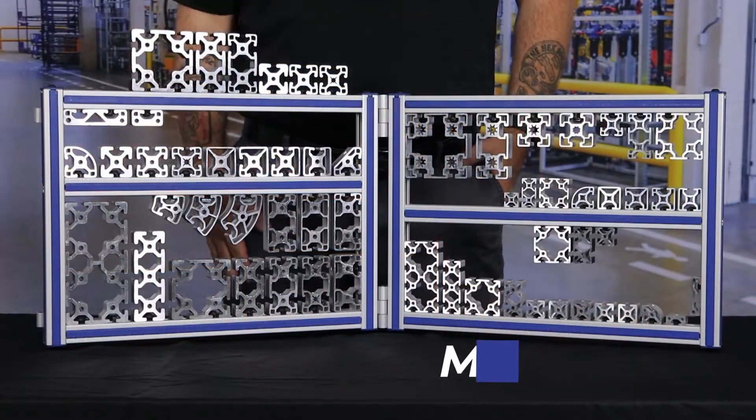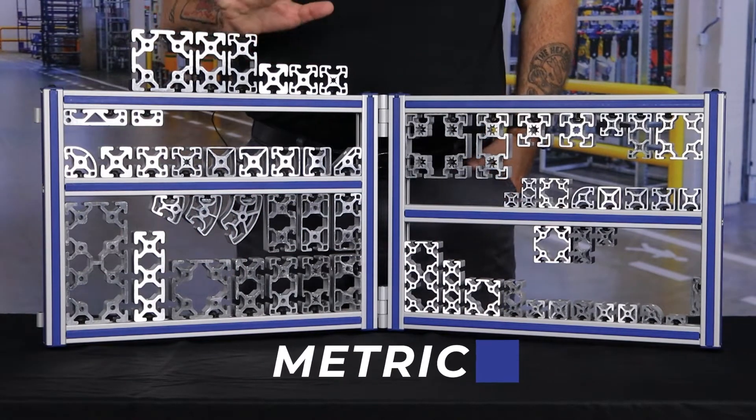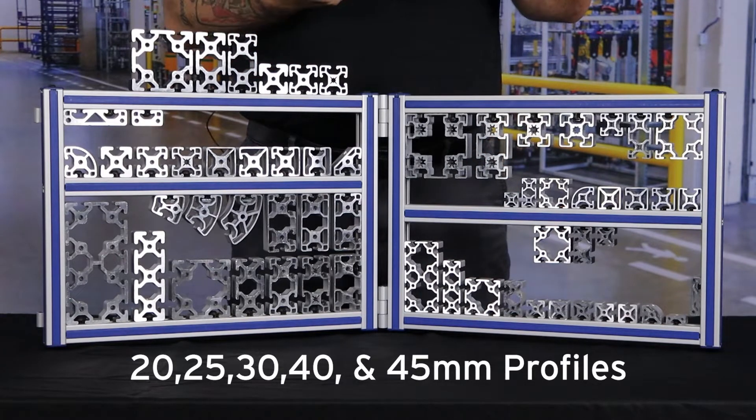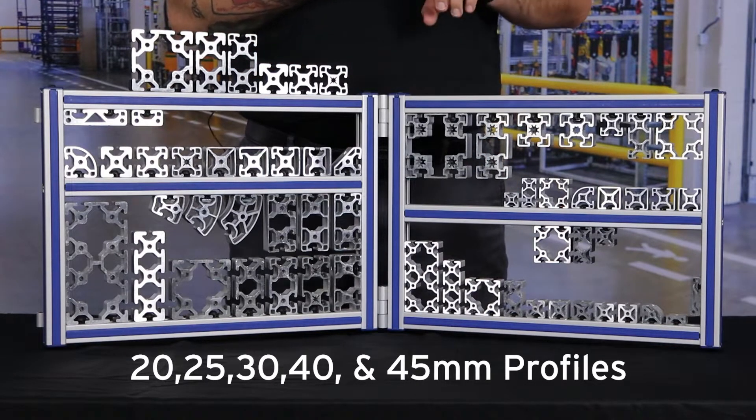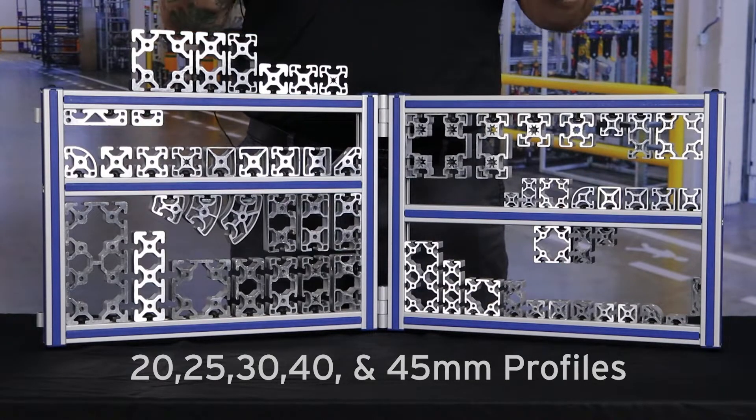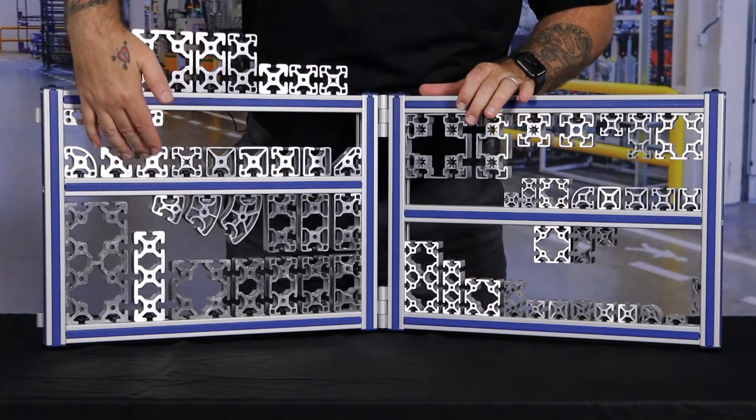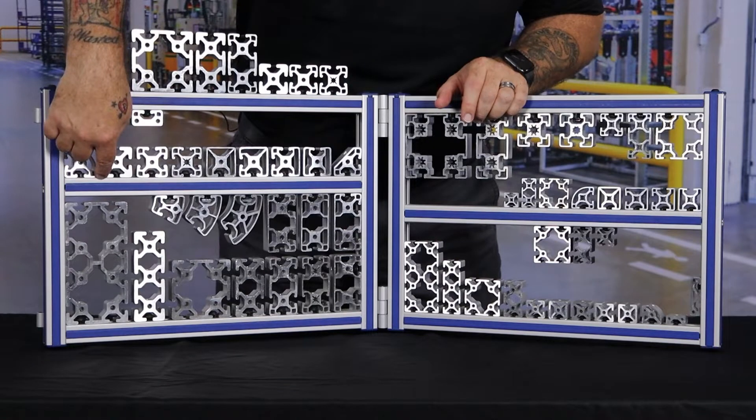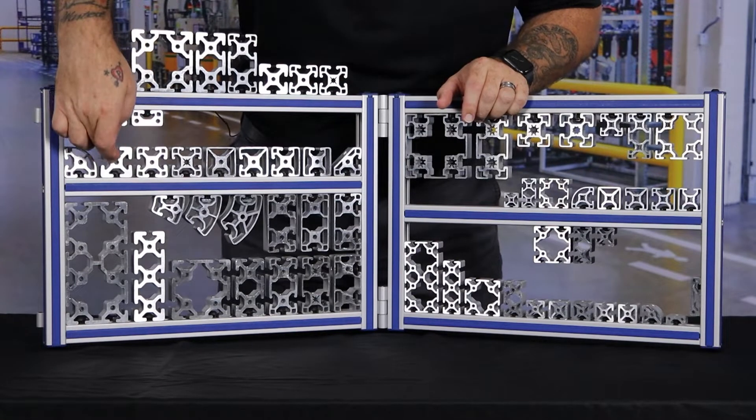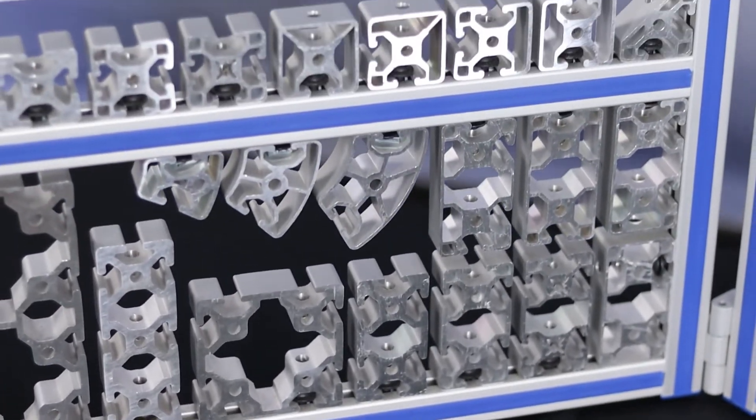Okay, so first we're going to get started with the metric series of 8020 extrusion. The metric extrusion is available in a 20 millimeter, a 25 millimeter, a 30 millimeter, 40 millimeter, and a 45 millimeter profile. What that means, if you can look down here, is this actually happens to be a 40 millimeter profile. So this bar here is a 40 millimeter by 40 millimeter profile, and they multiply as the sides change.